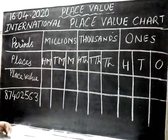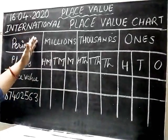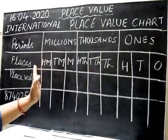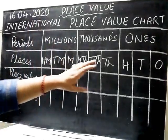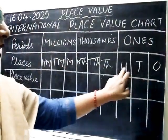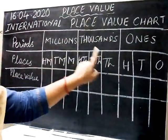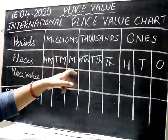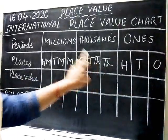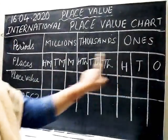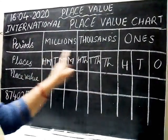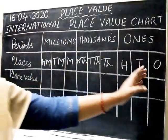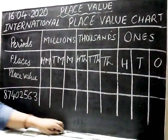So here you will see children, in the international place value system each period has been divided into three parts — each period has three places. Ones has ones, tens, hundreds. Thousands has thousands, ten thousands, hundred thousands. Millions has million, ten million, hundred million. Everywhere a tens place and a hundreds place is present. And when we proceed from right to left, each place is a multiple of ten.